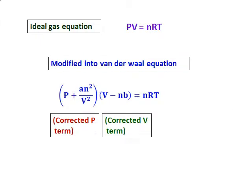We know the ideal gas equation as PV equals nRT. The deviation from ideal behavior is given by Van der Waals equation as given over there. P plus AN squared over V squared times V minus NB equals nRT. The A factor is the correction for the pressure term, and the B factor is the correction for the volume term.